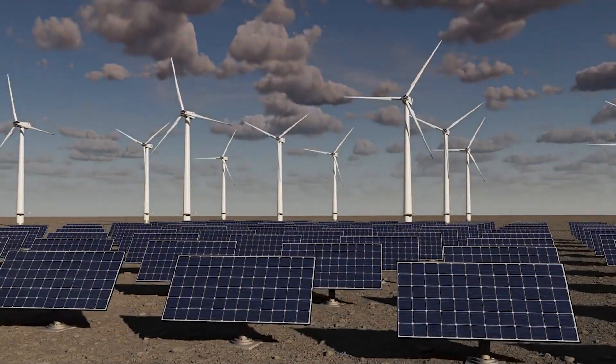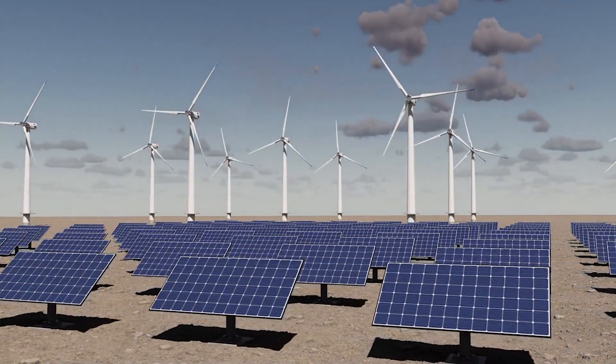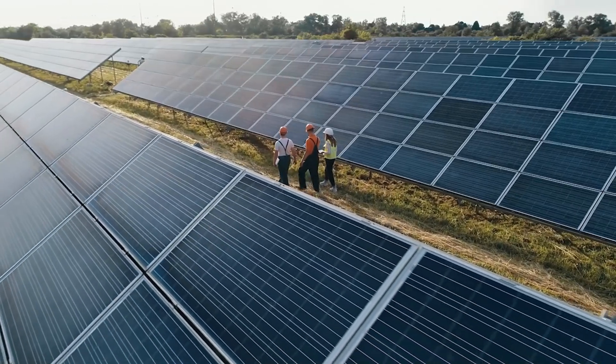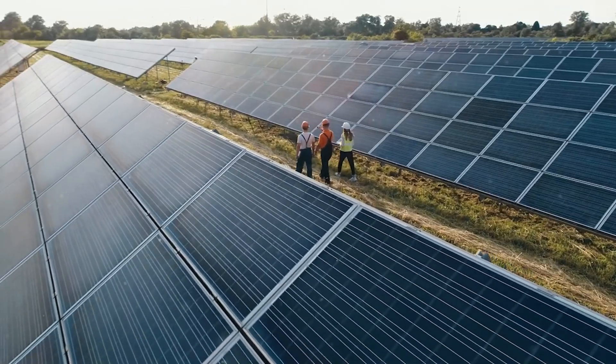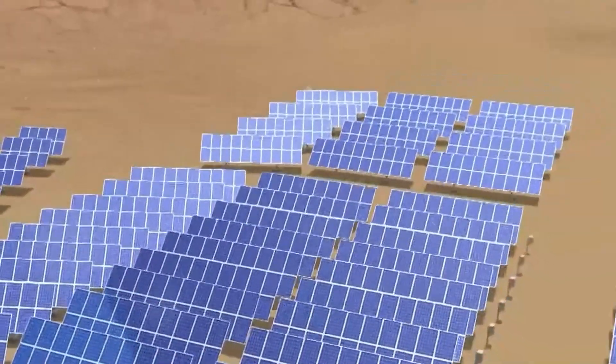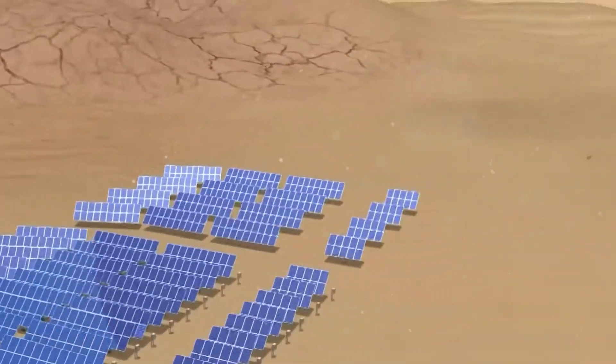Solar power, in particular, poses unique challenges to grid integration because of the need to convert the direct current output from solar panels into alternating current, AC, for use on the grid.